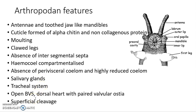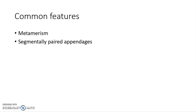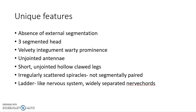Arthropodan features include: antennae and tooth-like mandibles, cuticle formed of alpha-chitin and proteins, molting, clawed legs, absence of intersegmental septum, compartmentalized coelom, absence of perivisceral septum, highly reduced haemocoel, salivary glands, tracheal system of respiration, open blood vascular system with a dorsal heart with paired valvular openings called ostia. Unique features of Onychophora include: absence of external segmentation, pre-segmented heart, velvety integument with body prominences, unjointed antennae, short jointed hollow clawed legs, irregularly scattered spiracles, ladder-like nervous system, and widely separated nerve cords.